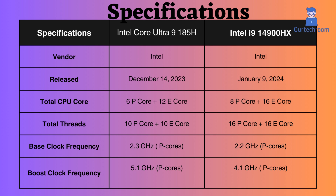The Core Ultra 9 185H has 6 performance cores and 12 efficiency cores, whereas the Core i9-14900HX has 8 performance cores and 16 efficiency cores. The Core Ultra has 10 performance threads and 10 efficiency threads, whereas the Core i9-14900HX has 16 performance threads and 16 efficiency threads.